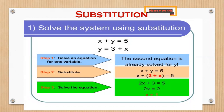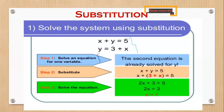When solving using the substitution method, we have a set of two equations whereby we need to get a pair of answers, which is the x and y values. The first thing we do is solve an equation of one variable — that is, we express one of the variables in terms of the other. You can choose to express x in terms of y, making x the subject of the formula, or you can choose to express y in terms of x.